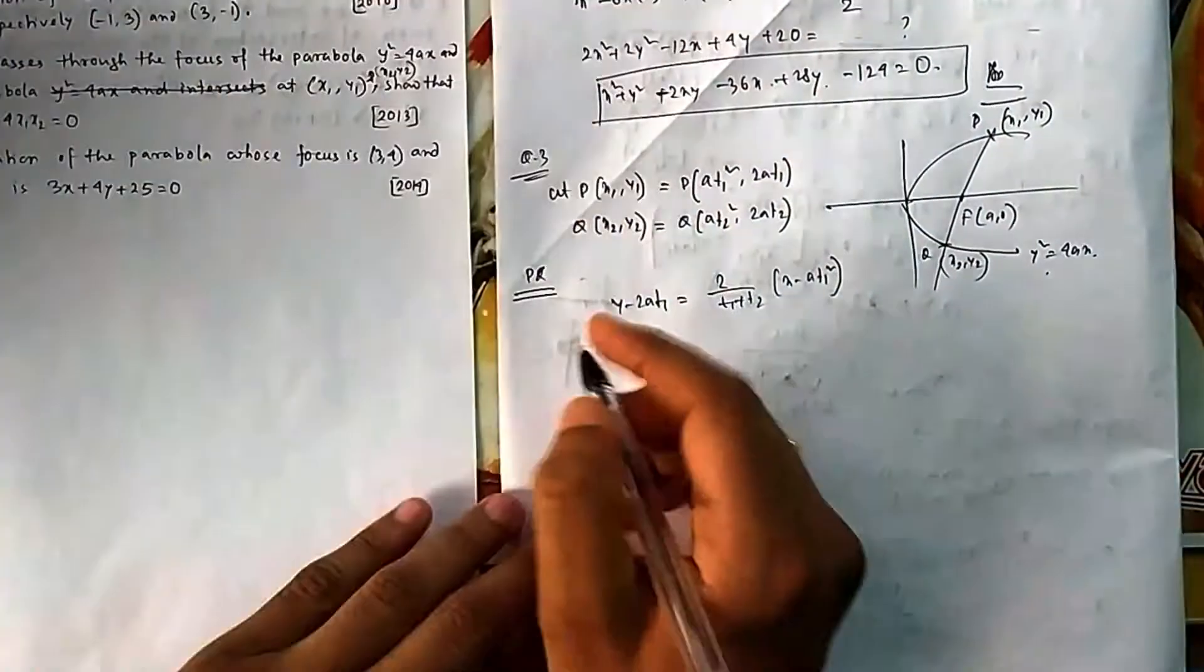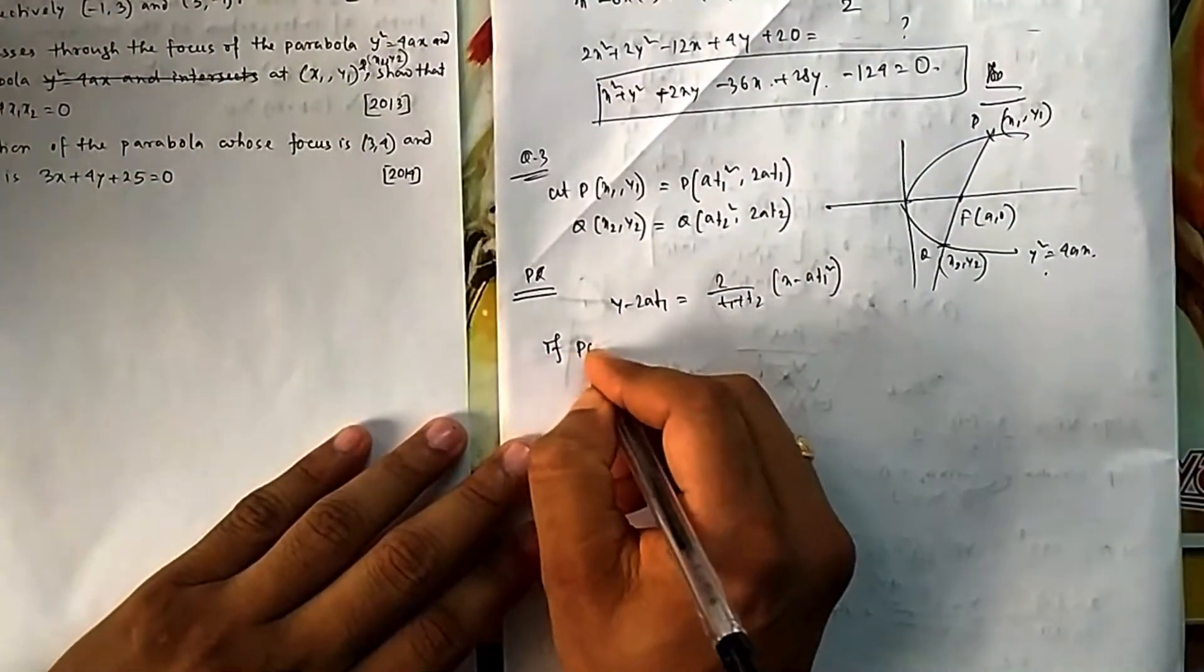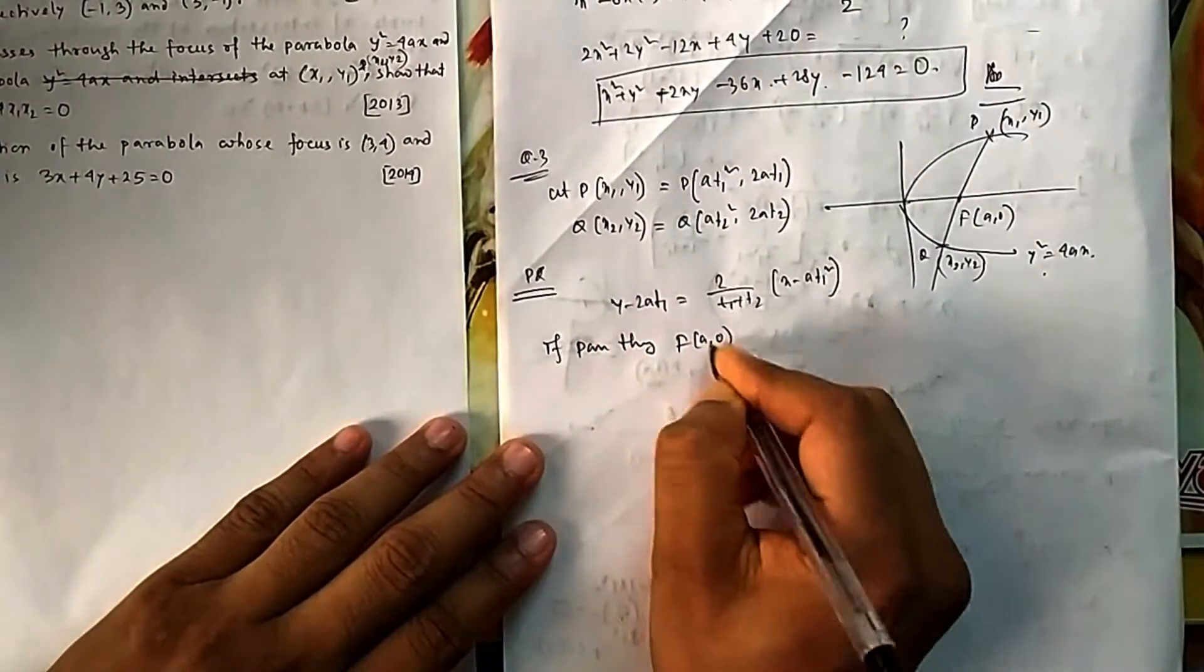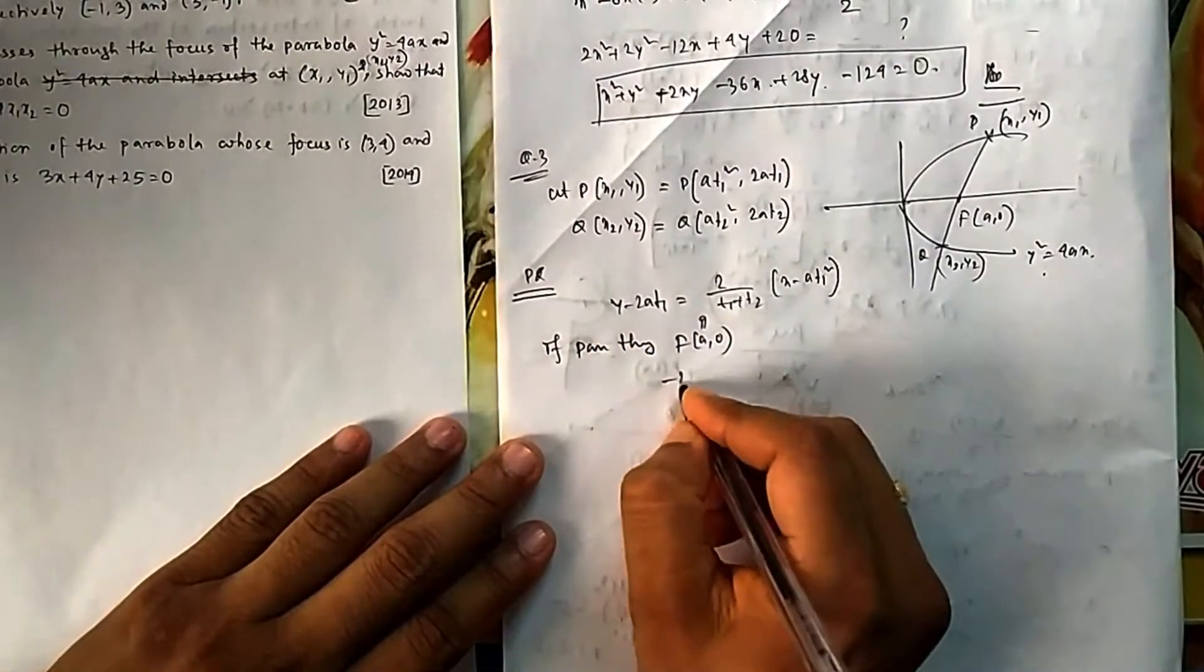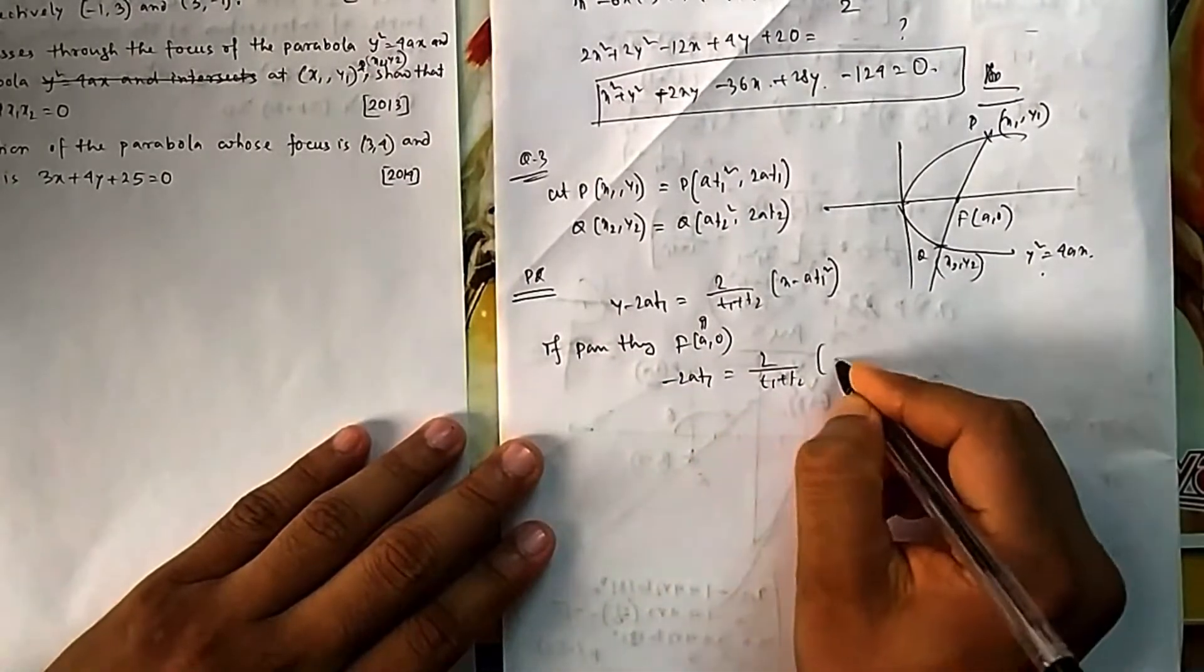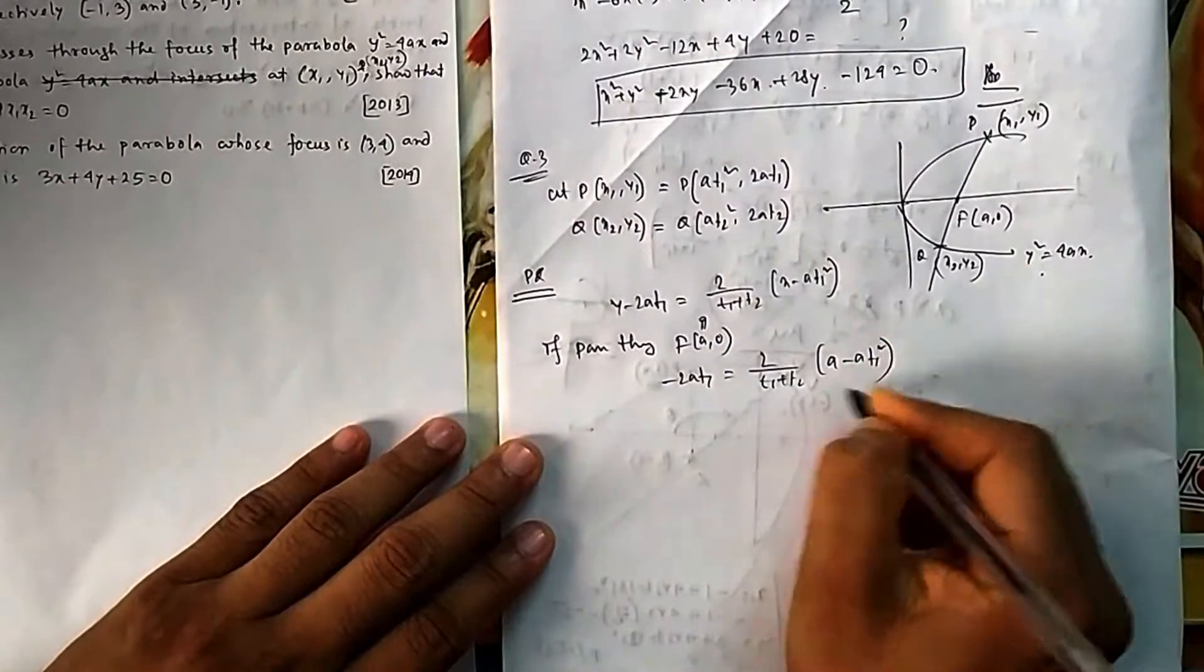Again, same condition: it passes through F, that is (a, 0). So if you put (a, 0), so it will be - again I am writing it but I will not solve it; you can easily solve it by seeing the same.